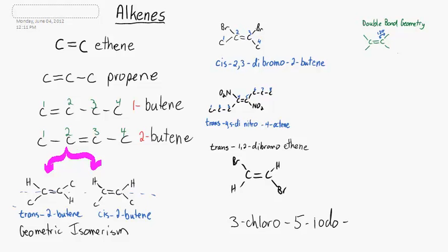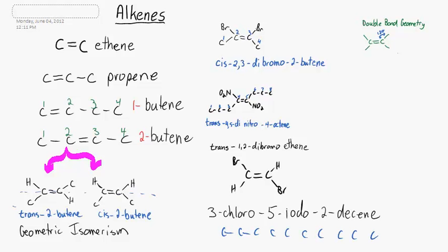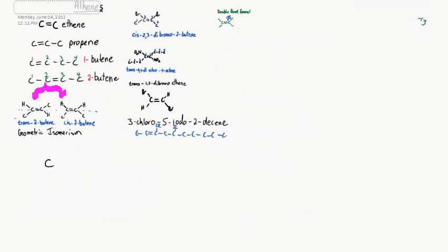Here's another one. Pause and try it. Well, 3-chloro-5-iodo-2-decene has ten carbons with a double bond between carbon-2 and carbon-3, a chloro on carbon-3 and an iodo on carbon-5.